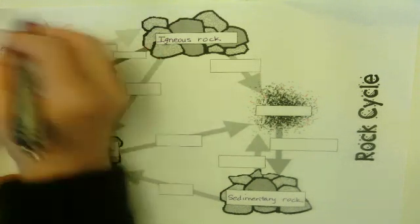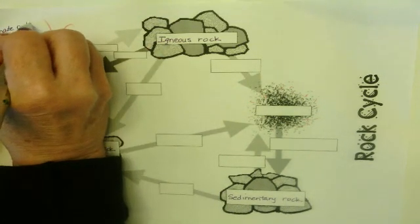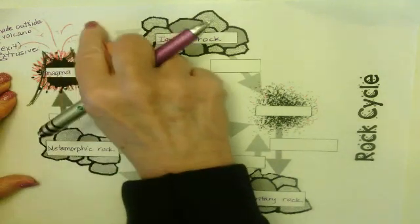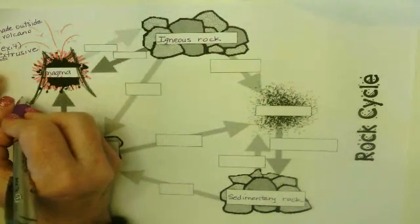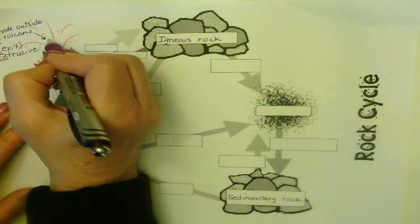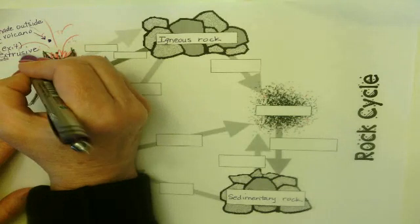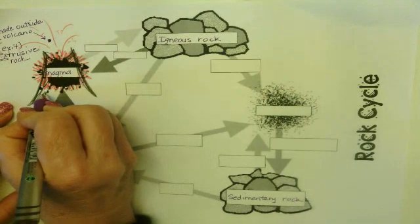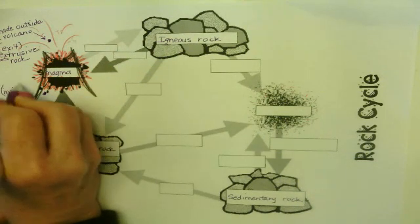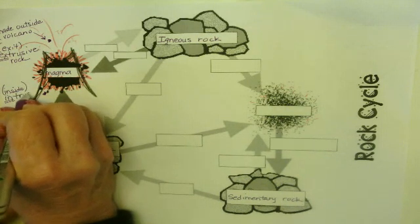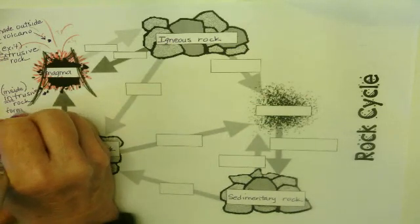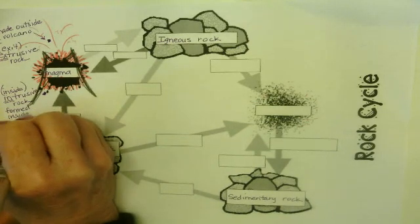If you're an extrusive rock, you are made outside a volcano — you have to be formed outside. If a rock is formed inside the volcano, it's called intrusive — an intrusive rock is formed inside a volcano.